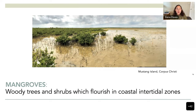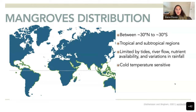This is pretty much what it looks like in Corpus and all the Texas coast. Mangroves are distributed worldwide in the tropical and subtropical regions ranging from 30 degrees north to 30 degrees south. Globally and locally, they are delimited by tides, by river flow, by nutrient availability, and by variations in freshwater inputs.